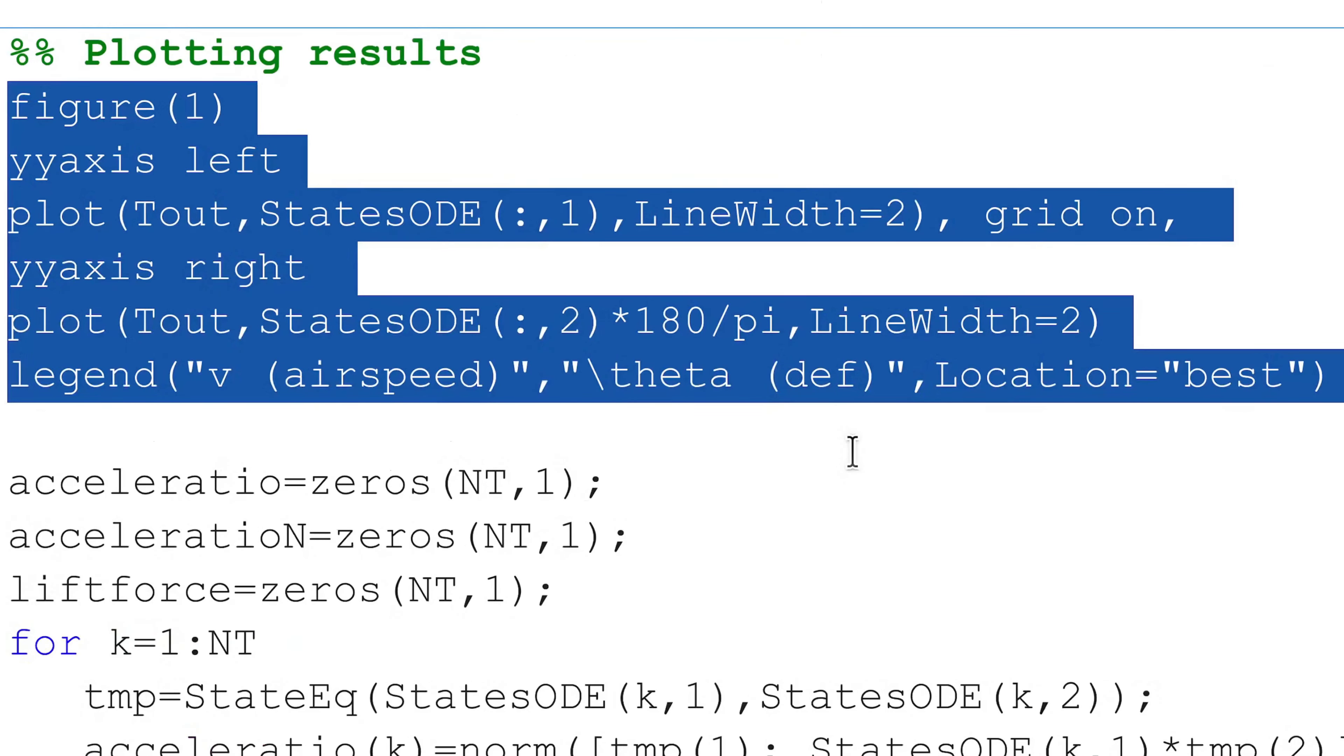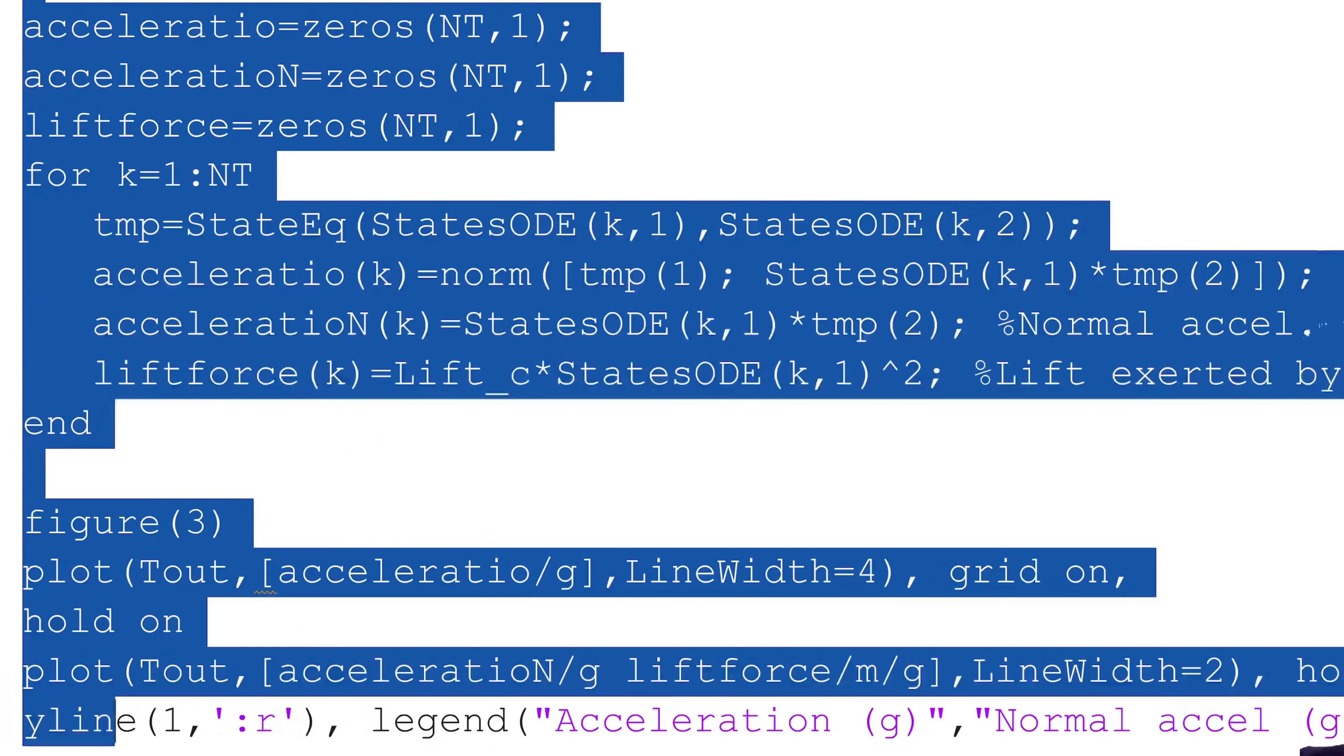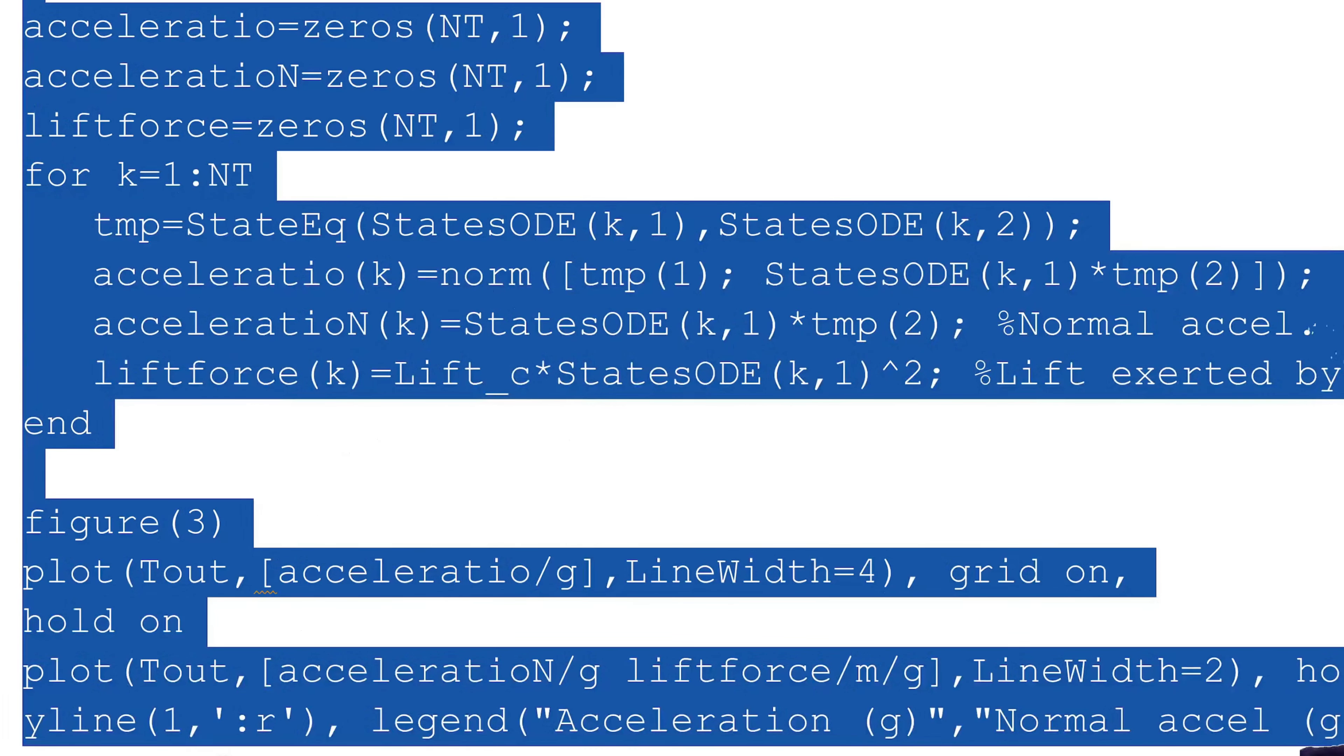If we first look at this code, in this code we plot the first state, airspeed, and the second state, pitch angle, with this kind of axis and plot stuff that you can look in MATLAB's documentation if you have doubts on what each line does.